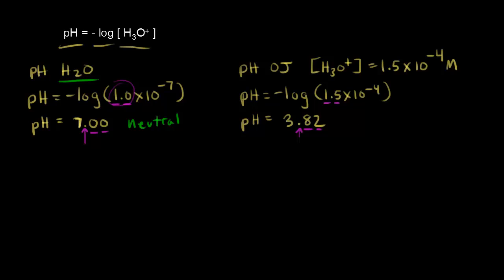A pH of 3.82 is lower than 7. So whenever your pH is lower than 7, you're talking about an acidic solution. Our orange juice solution is acidic.